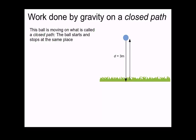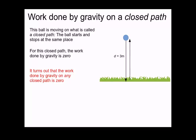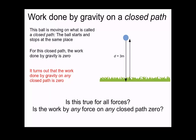The ball in this example is moving on what is called a closed path — the ball starts and stops in the same place. We've just seen that for this particular closed path, the work done by the gravitational force is equal to 0. It turns out that the work done by gravity on any closed path is equal to 0. This leads to a question: is this statement true for all forces? Is the work done by any force on any closed path always equal to 0?